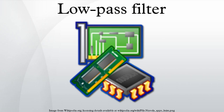A low-pass filter is the opposite of a high-pass filter. A band-pass filter is a combination of a low-pass and a high-pass. Low-pass filters exist in many different forms, including electronic circuits, anti-aliasing filters for conditioning signals prior to analog-to-digital conversion, digital filters for smoothing sets of data, acoustic barriers, blurring of images, and so on.